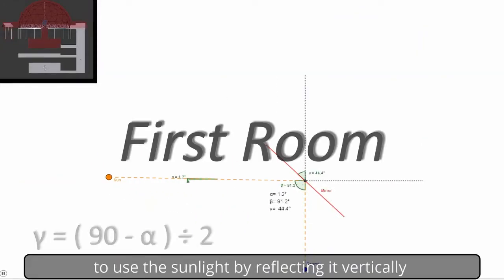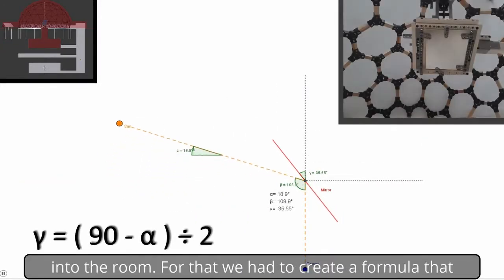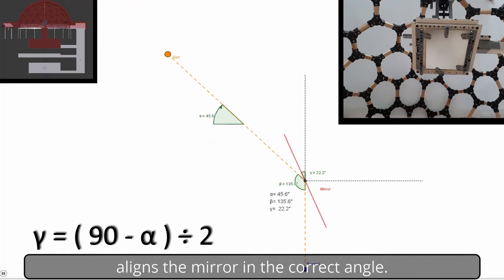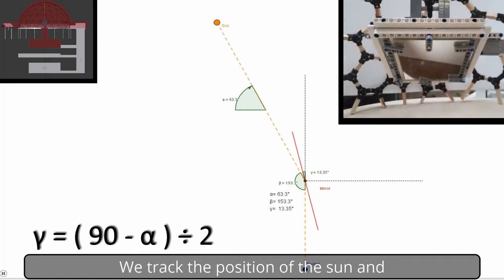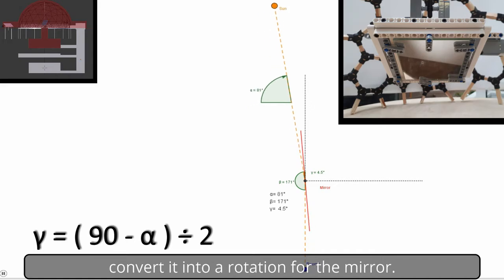For the first room we decided to use the sunlight by reflecting it vertically into the room. For that we had to create a formula that aligns the mirror in the correct angle. We track the position of the sun and convert it into a rotation for the mirror.